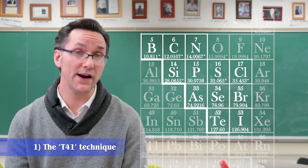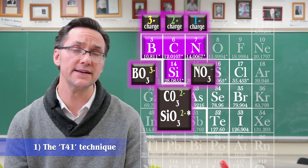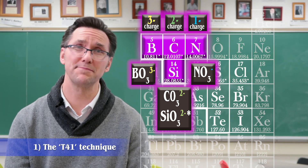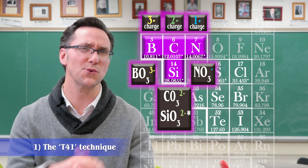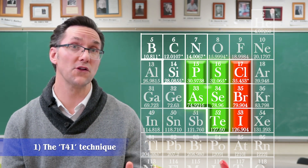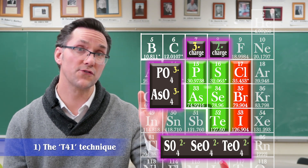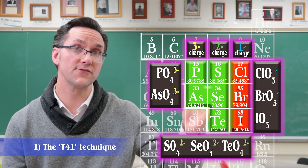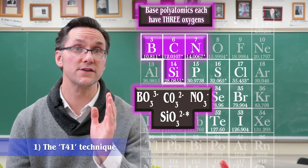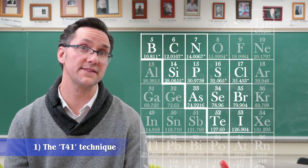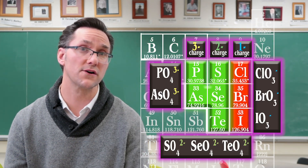We follow a very simple pattern to get the charge. Starting with boron, we go three, two, one in the T. There are a couple of different silicates, but one of them is SiO3 with a negative two charge, so we'll let it slide. In the four and the one, we repeat the pattern: three with the phosphorus, two for sulfur's line, and then one for the halogens. So T4I: T has three oxygens, four has four oxygens, I has three oxygens, and the charges follow the pattern three, two, one — then repeat again three, two, one.